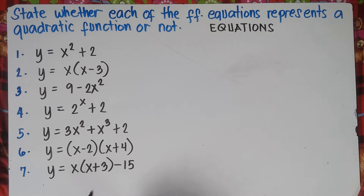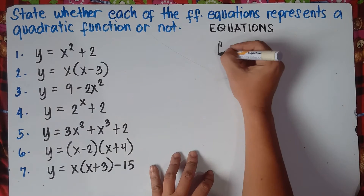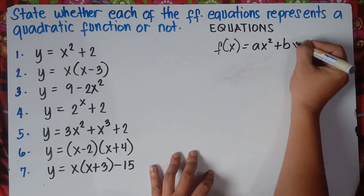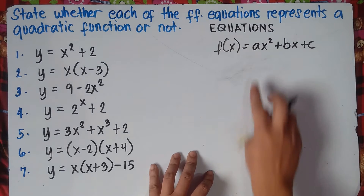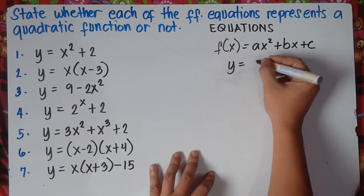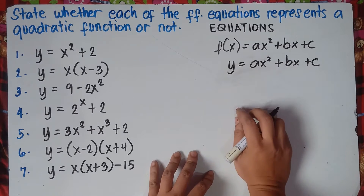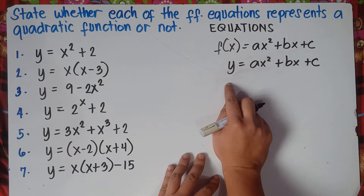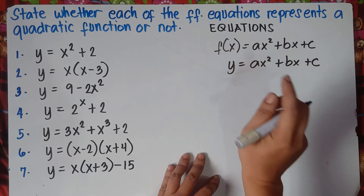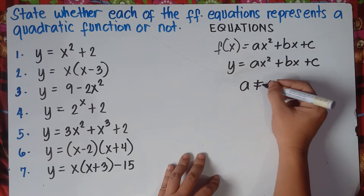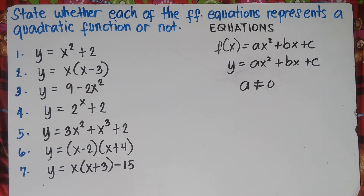Before answering numbers 1 to 7, you need to know what the general form of a quadratic function is. The general form is f(x) = ax² + bx + c. You can also write this as y = ax² + bx + c. Either f(x) or y is the same. And your a should not be equal to 0.